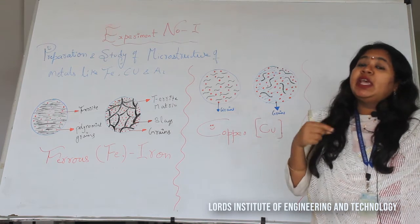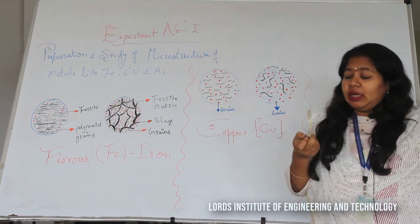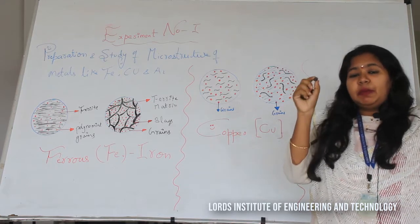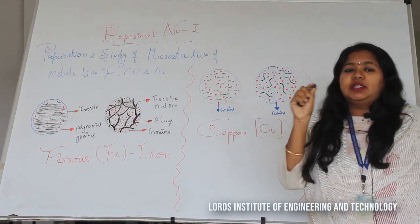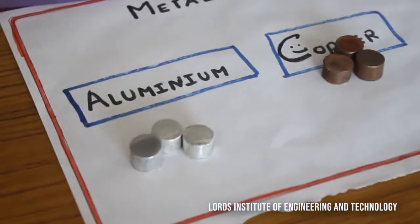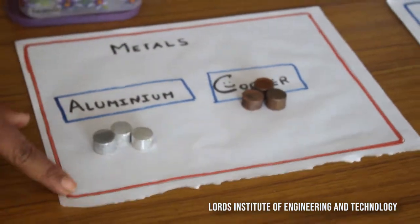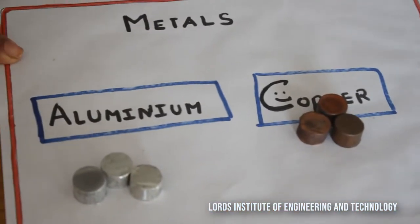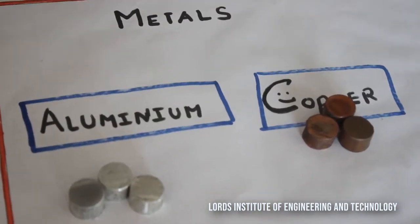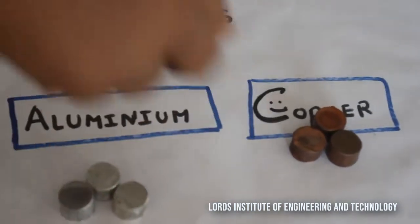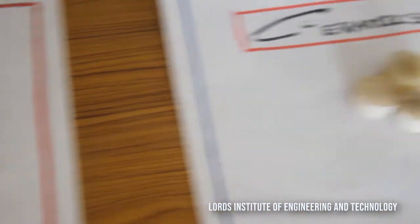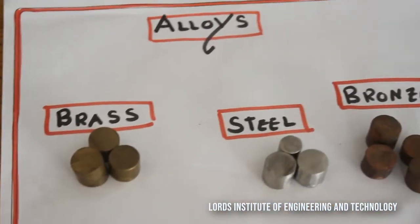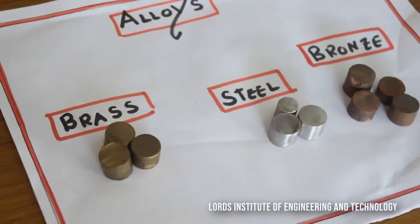Let us go through the different etchants — the chemical liquid and powder we are going to use for preparation of this experiment. In this metallurgy lab, we are going to focus on different metals, ceramics, and alloys. Now let us see, for iron, copper, and aluminium, how the microstructure is going to vary.